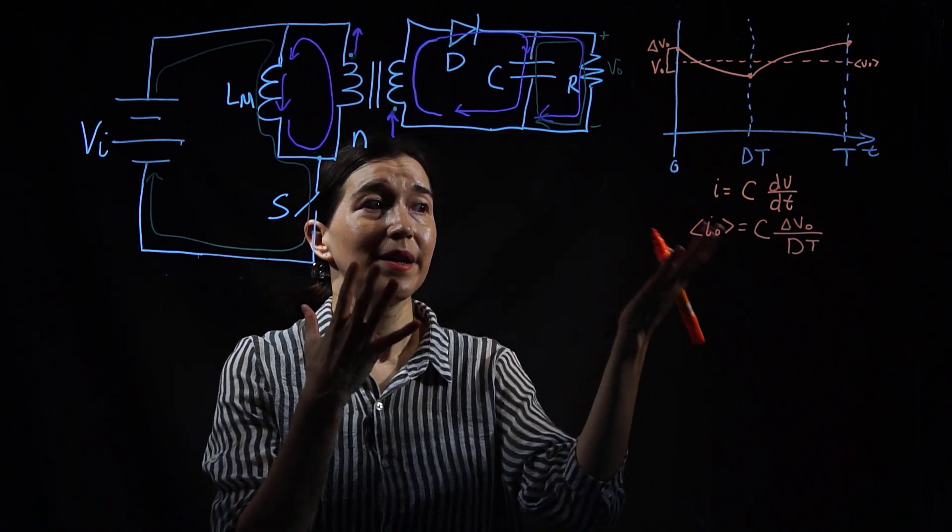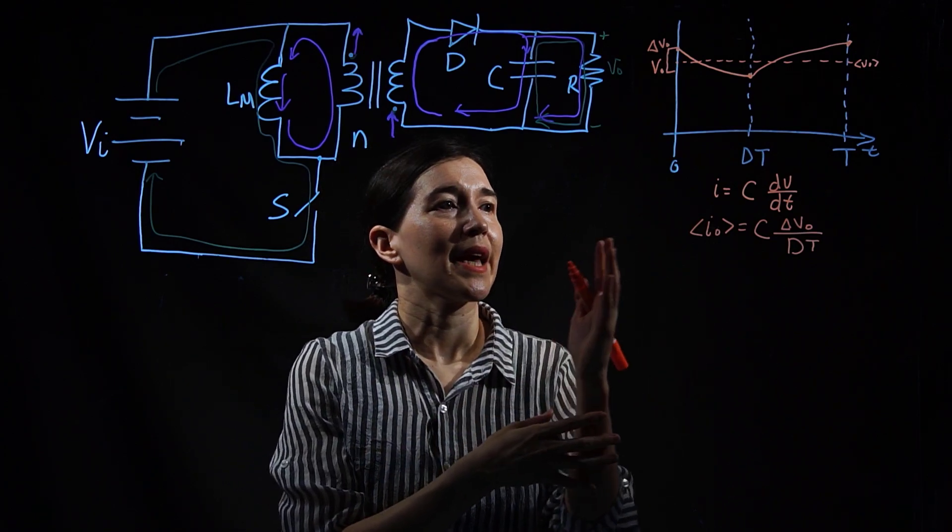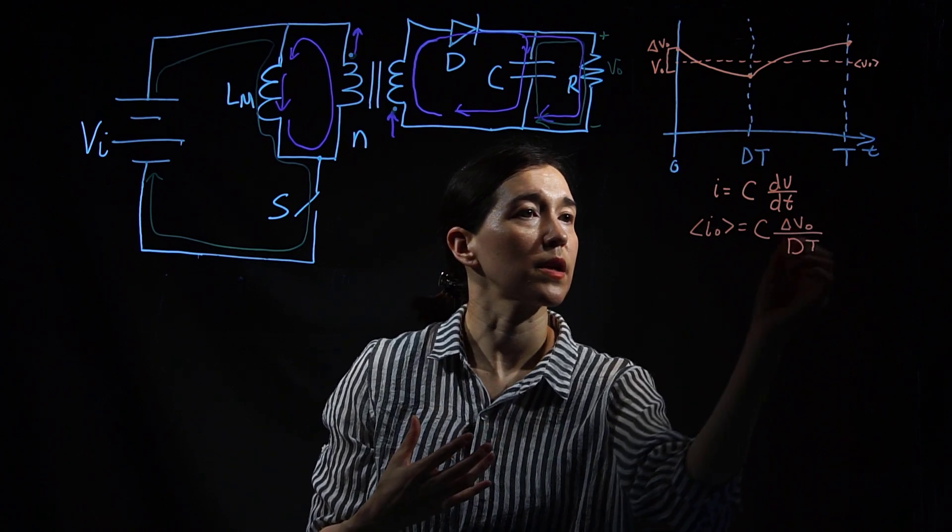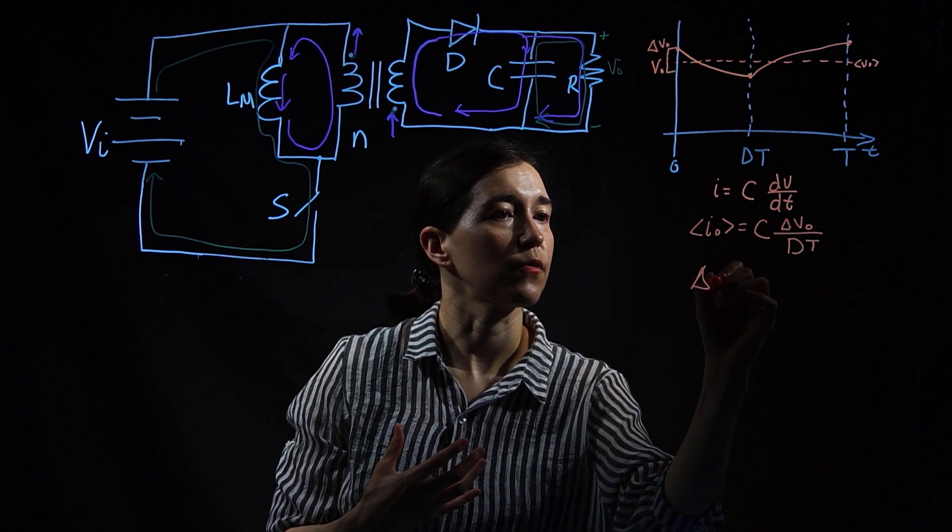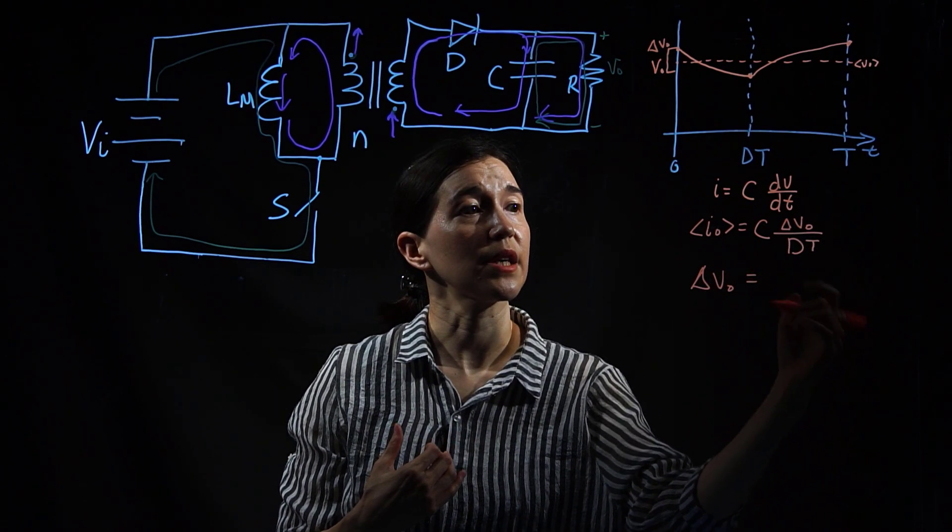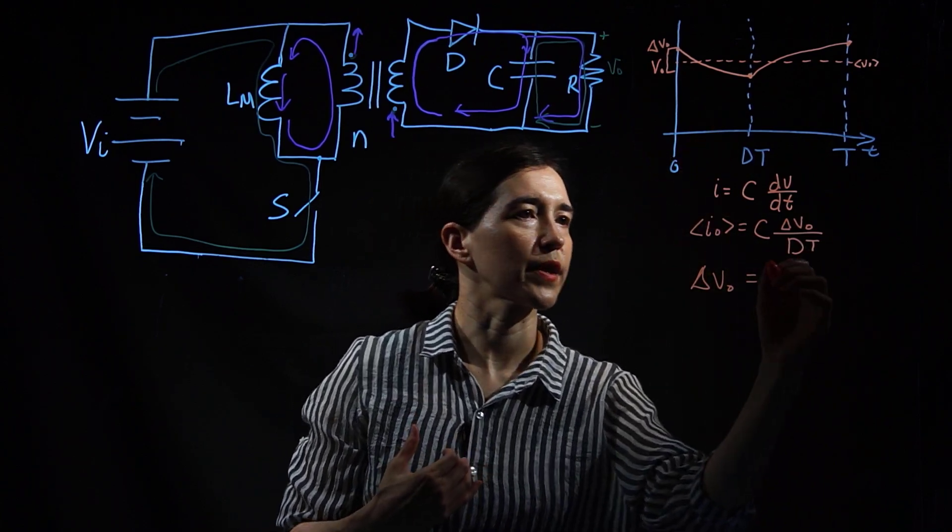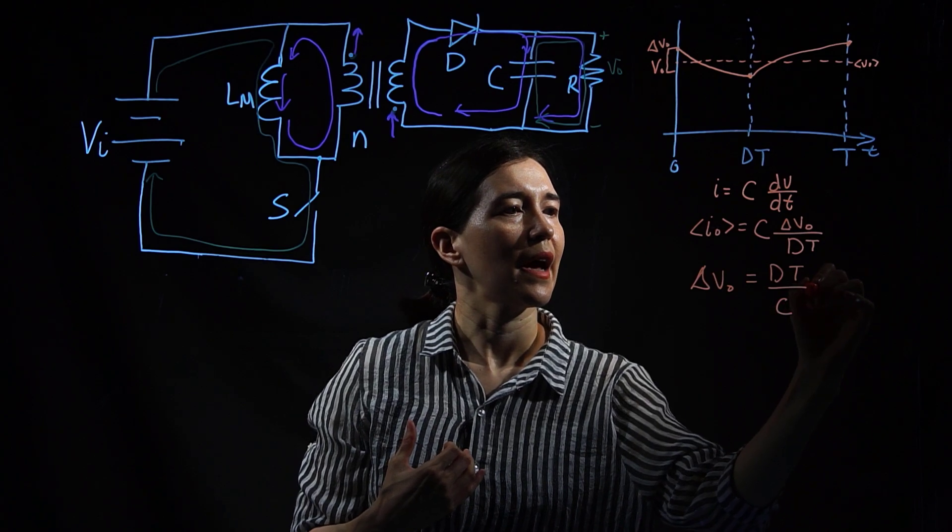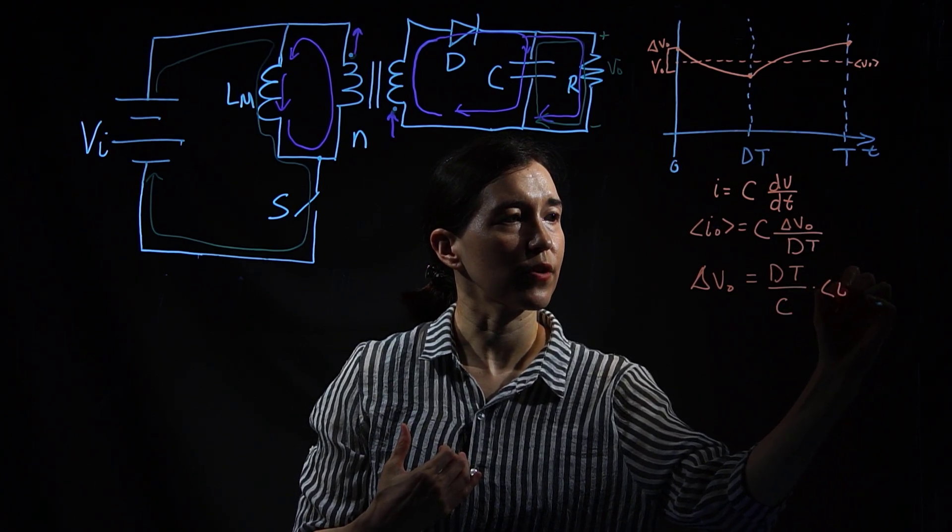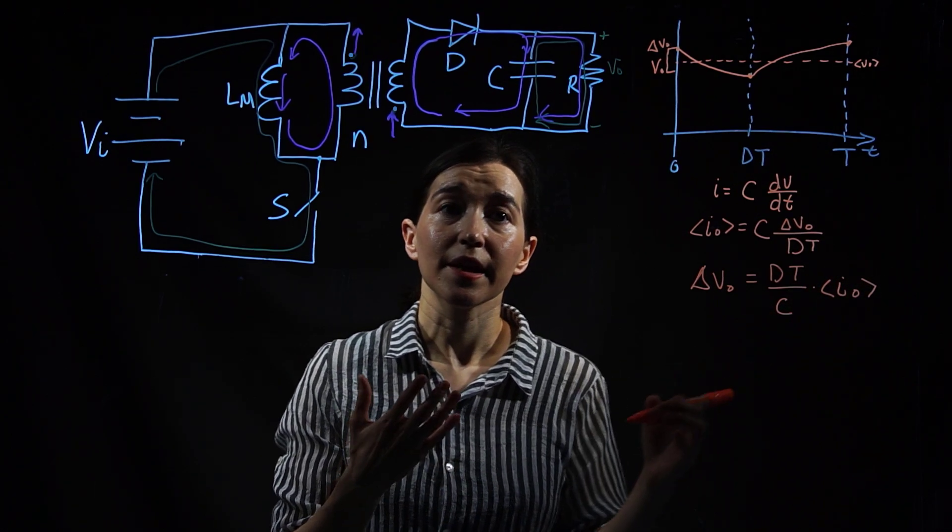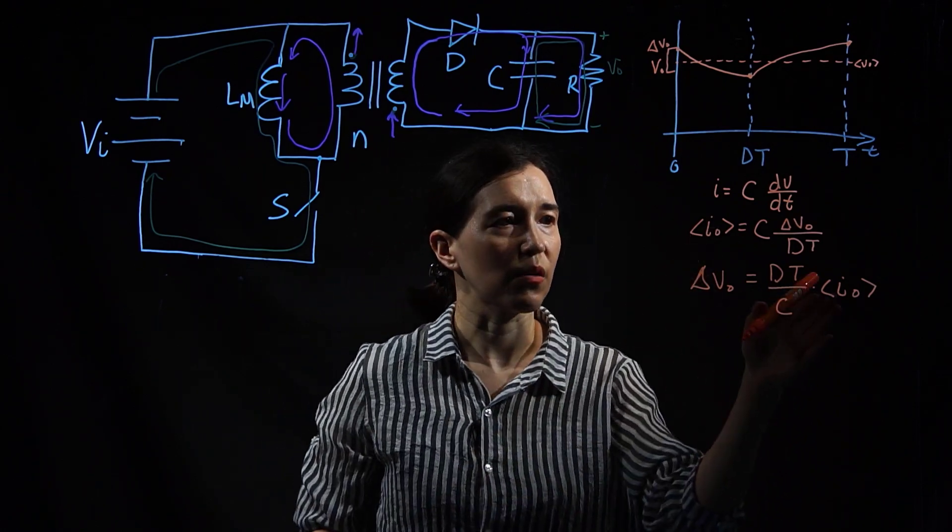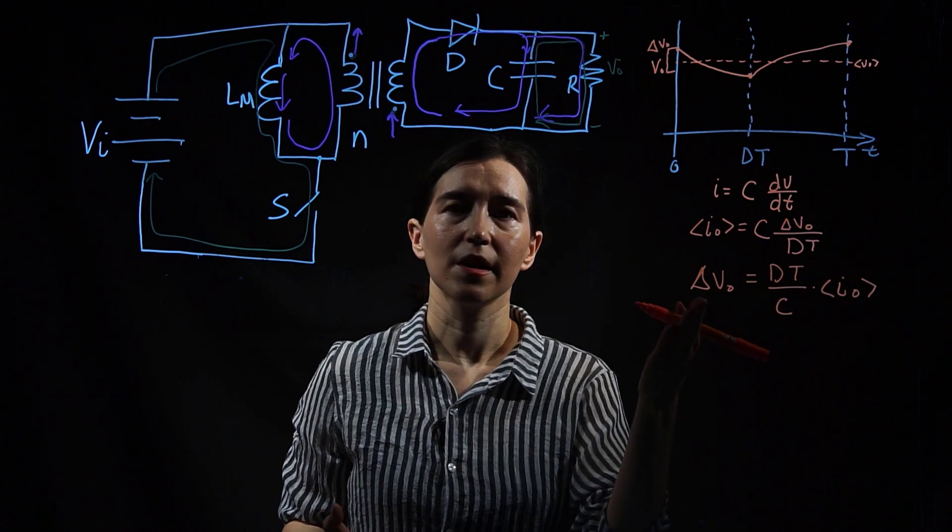Here is our basic equation from that, and we want to solve for the ripple. We just can rearrange: delta V out equals, move some things over here. We're going to go dt divided by C, and then we can multiply by the average IO.